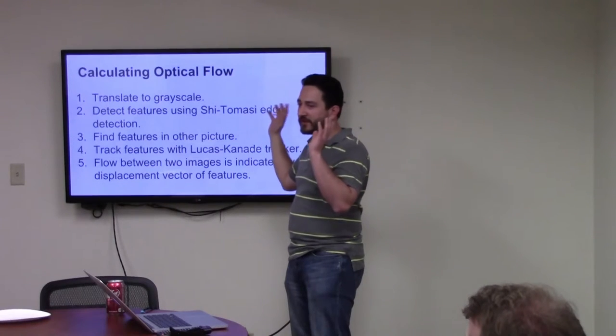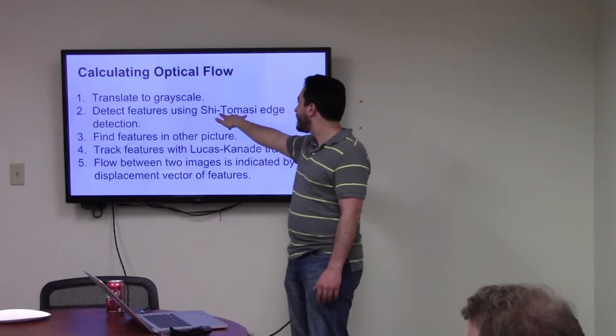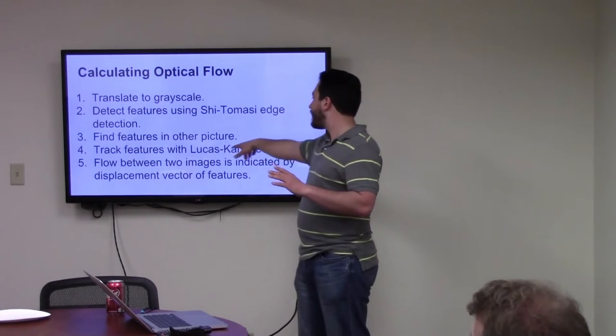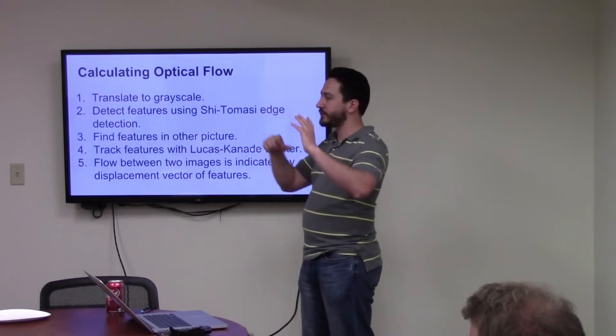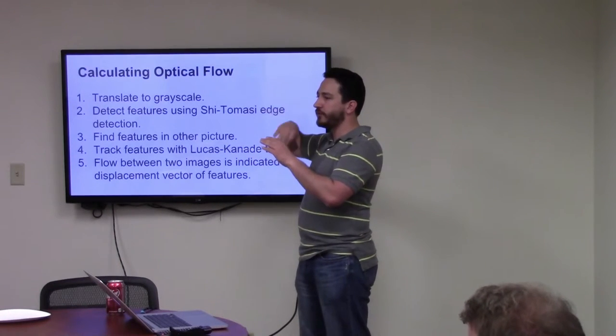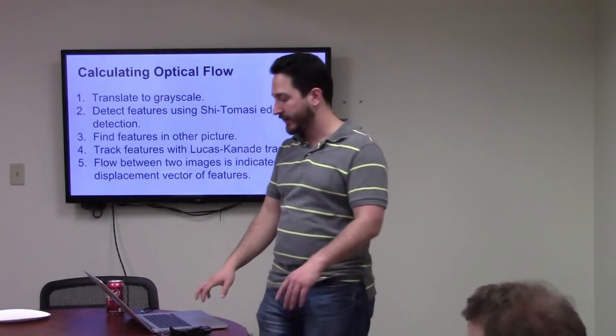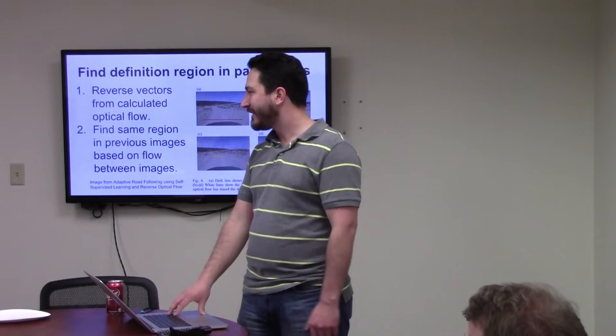They start off with Shi-Tomasi. And once they've found all of the features, then they keep that, and when they look at the next picture, they take those features and the features from that previous picture, and they track them between the two with the Lucas Kanade. It's my understanding. It's not really spilled out a whole lot in the paper. It's just these algorithms.